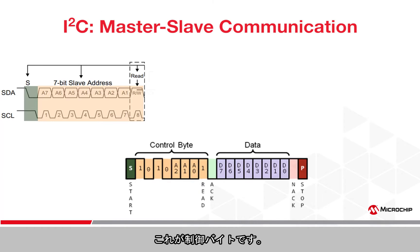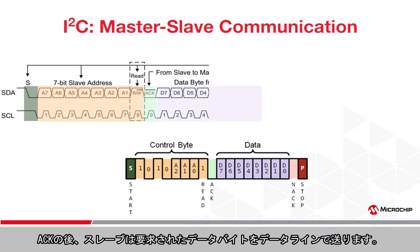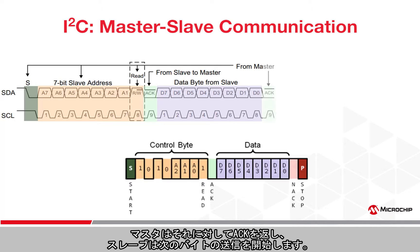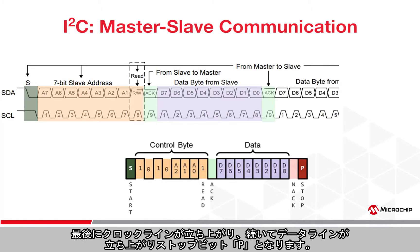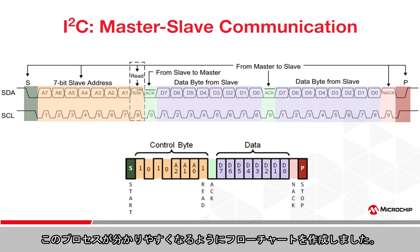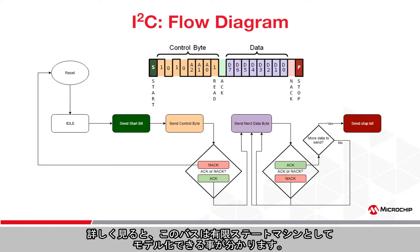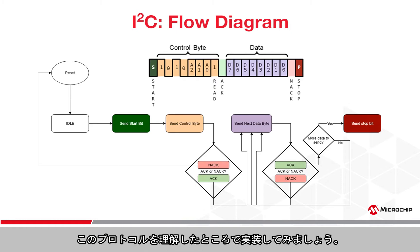The master follows up the 7-bit slave address with a single bit indicating whether data will be read or written, completing the control byte. The slave then acknowledges the transmission by pulling the SDA line low before the falling edge of the ninth clock pulse. Having acknowledged, the slave sends the requested data byte back across the data line. The master acknowledges and the slave starts transmitting the next byte. Finally, a stop bit is signaled when the clock line rises first, directly followed by the data line.